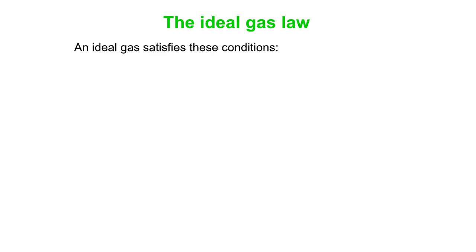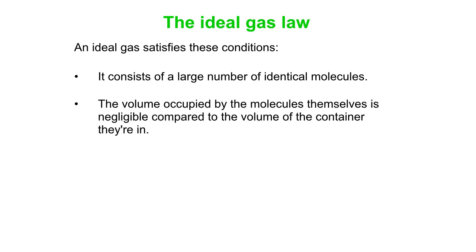Okay, so we have a law that goes along with that system. And so the ideal gas law satisfies the following conditions. It consists of a large number of identical molecules. This is a description of the ideal gas. So, you need a whole bunch of identical molecules. And the volume occupied by the molecules themselves is really small compared to the volume of the container that they're in.